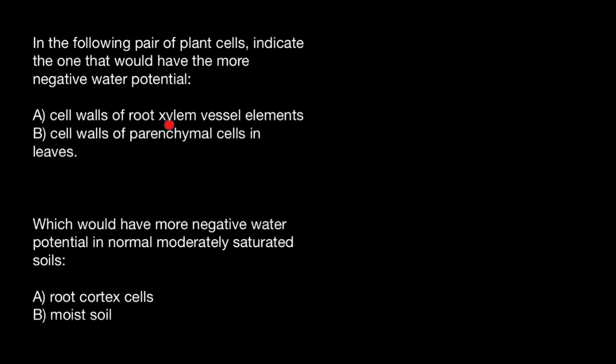Variant A: Cell walls of root xylem vessel elements, and B: Cell walls of parenchymal cells in leaves.